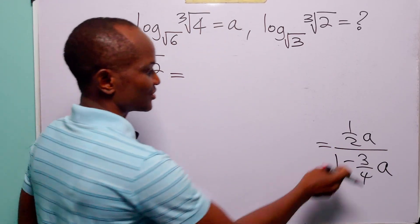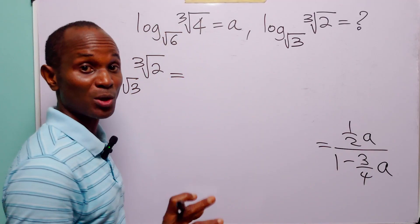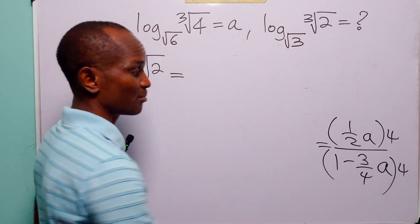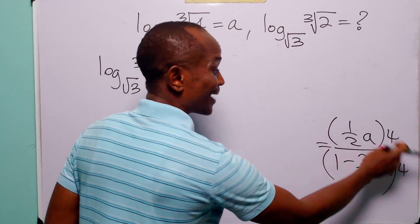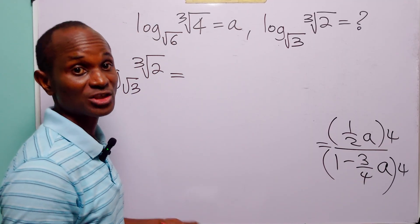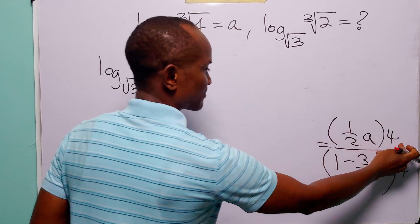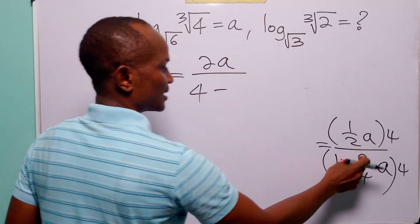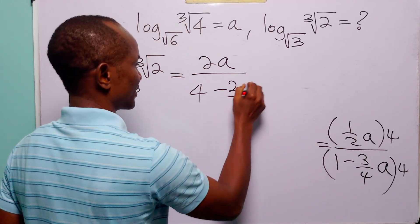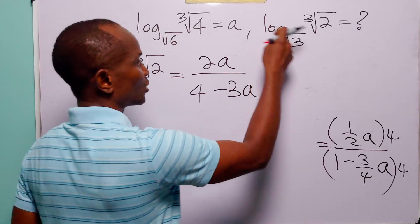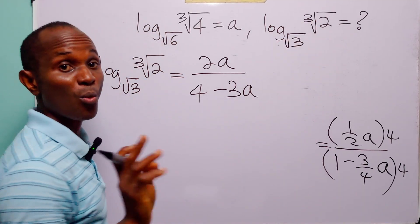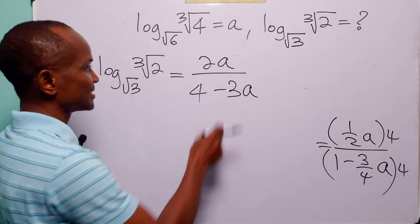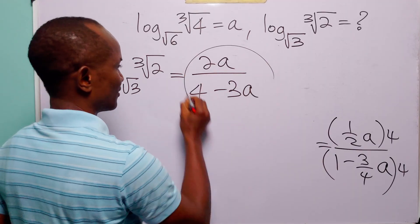Lastly, to clear the fractions, we multiply both the numerator and the denominator by 4. One half times 4 is 2; 1 times 4 is 4; and 3 over 4 times 4 is 3. So the value of log to base root 3 of the cube root of 2, when log to base root 6 of the cube root of 4 is equal to a, is 2a over 4 minus 3a.